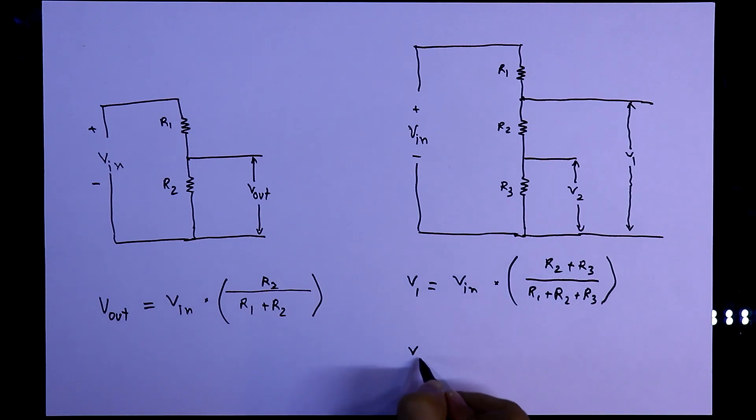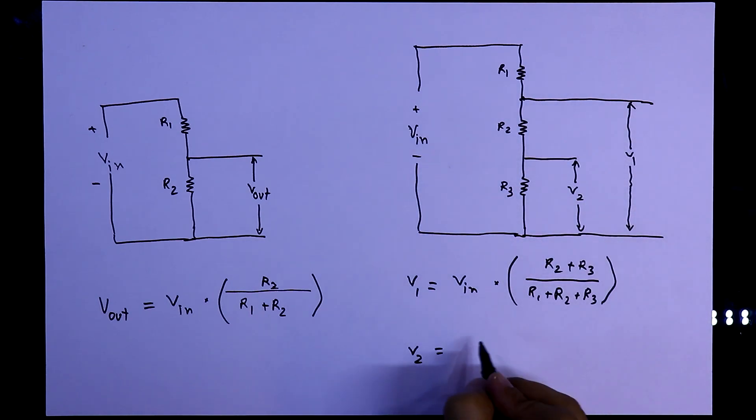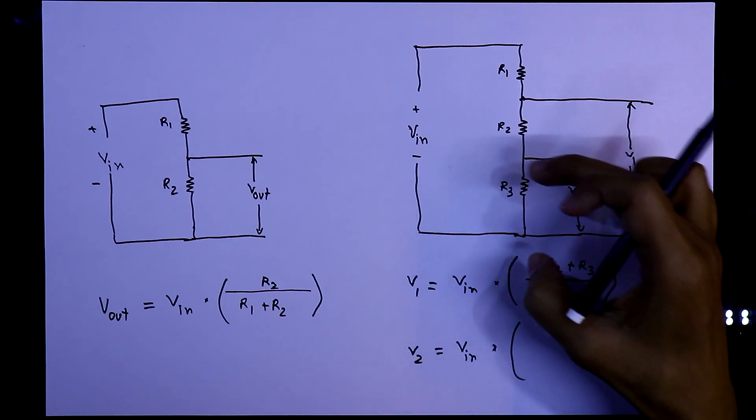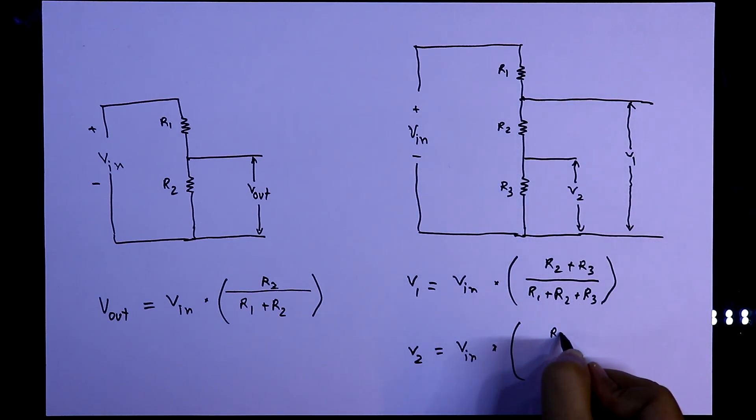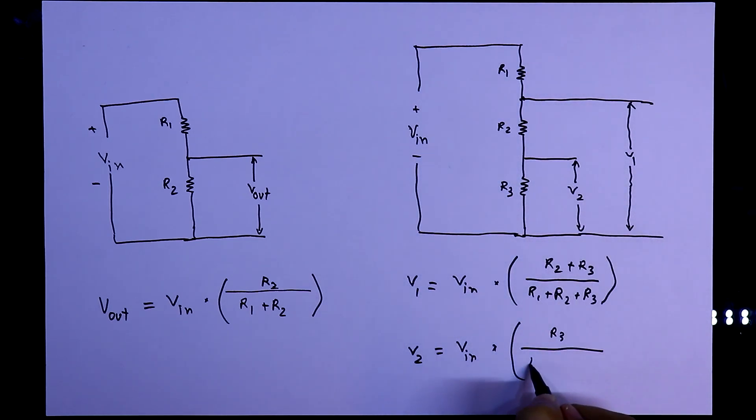And to find out V2 that is voltage across the R3, it is equal to Vin multiplied by, it is only R3. So R3 divided by total resistance of the circuit. R1, R2, R3. So this is how we have to design the voltage divider.